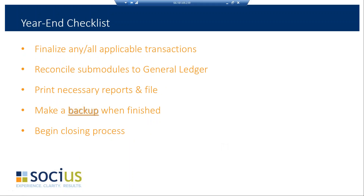A couple of quick things from your year-end checklist: make sure you finalize all applicable transactions — any transactions in 2016 should be wrapped up and posted before you begin your year-end. Reconcile your sub-modules to the general ledger, which means your accounts payable aged trial balance and accounts receivable should balance to your GL. Print any necessary reports and file them. Make a backup before you begin the closing process for your module, and then you can begin your closing.